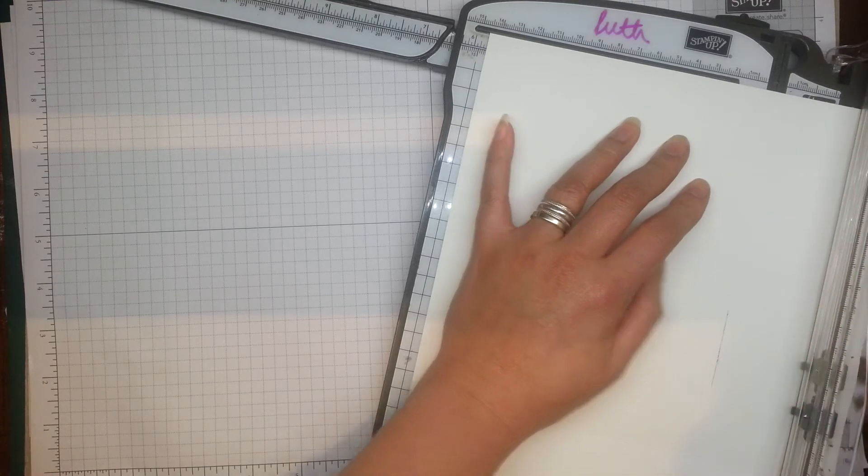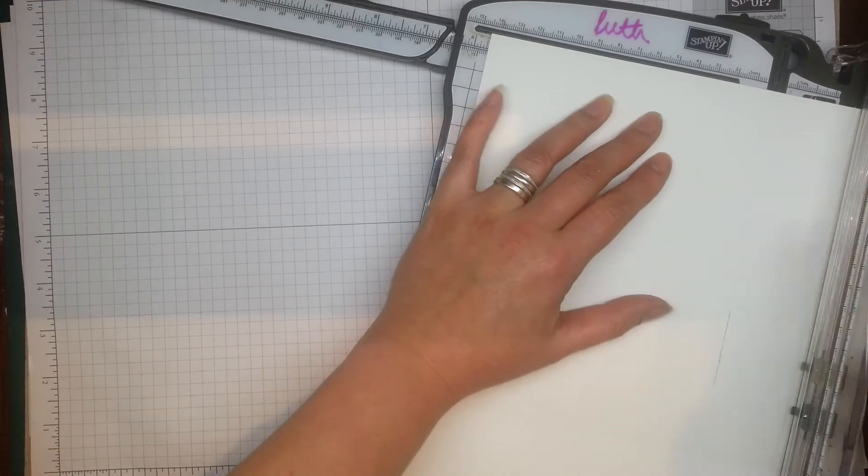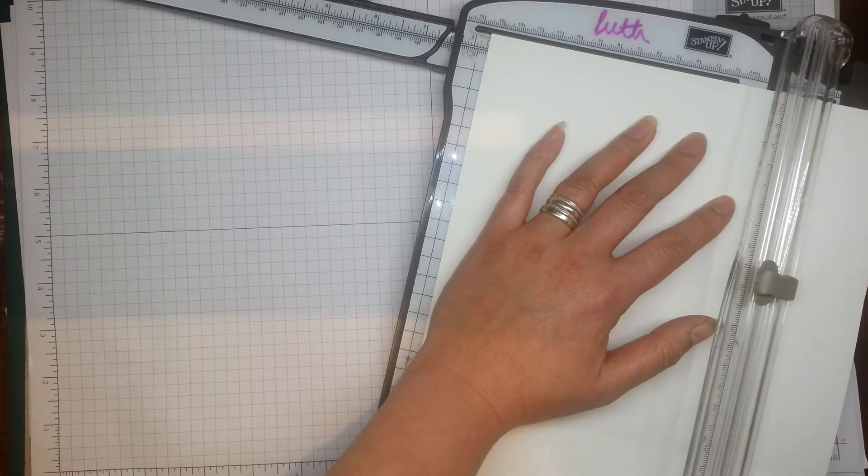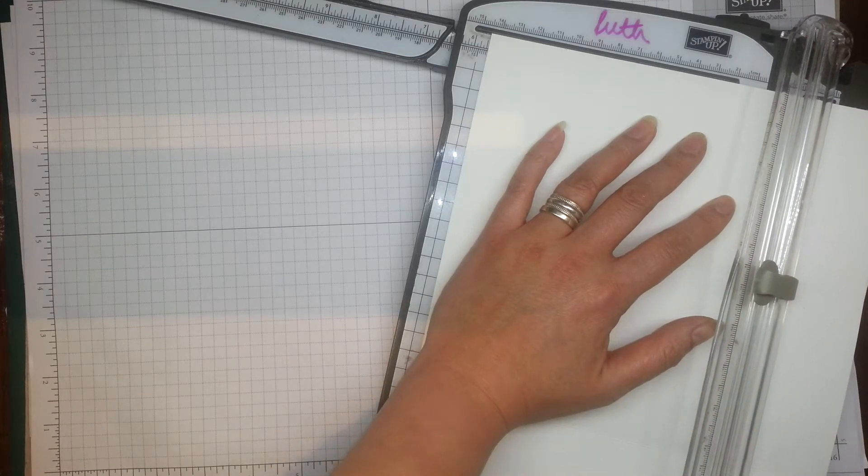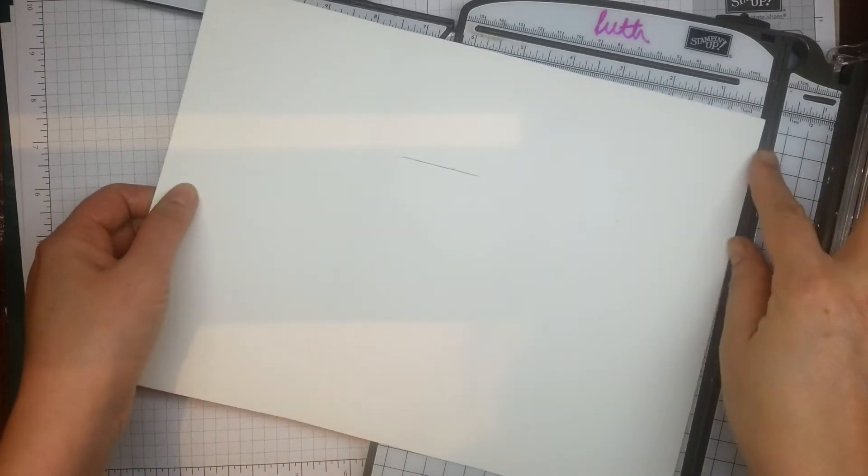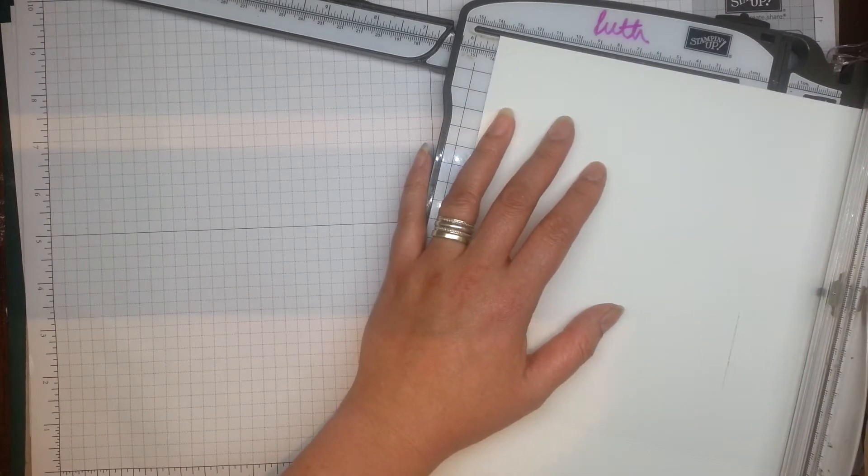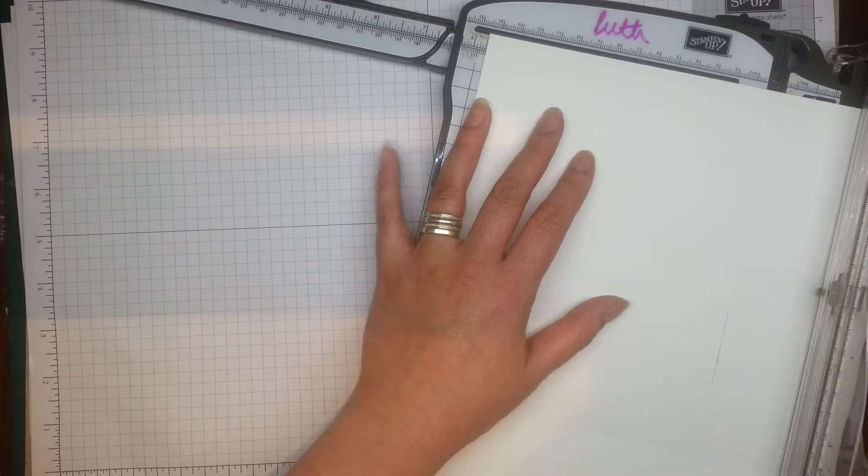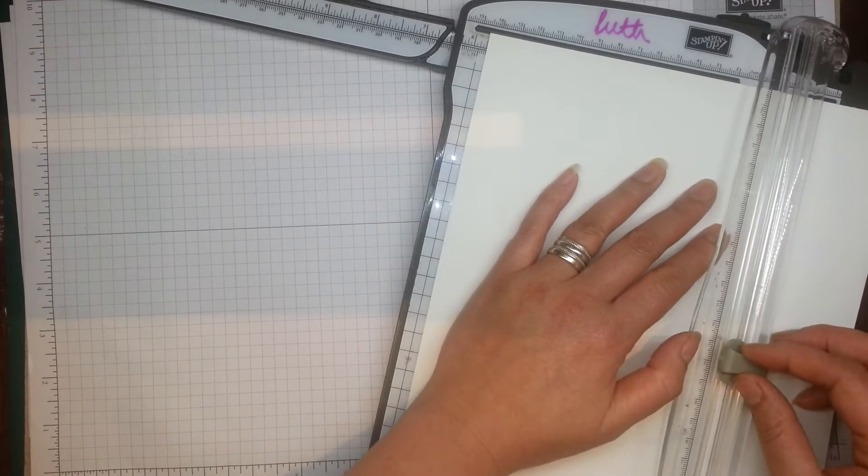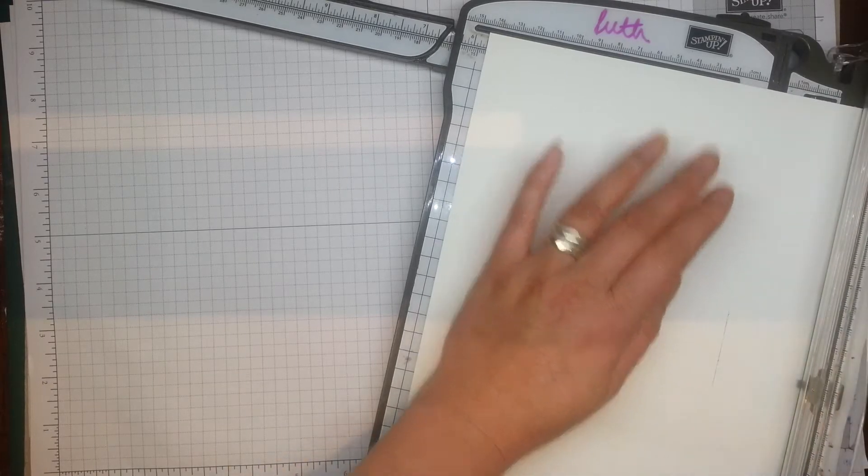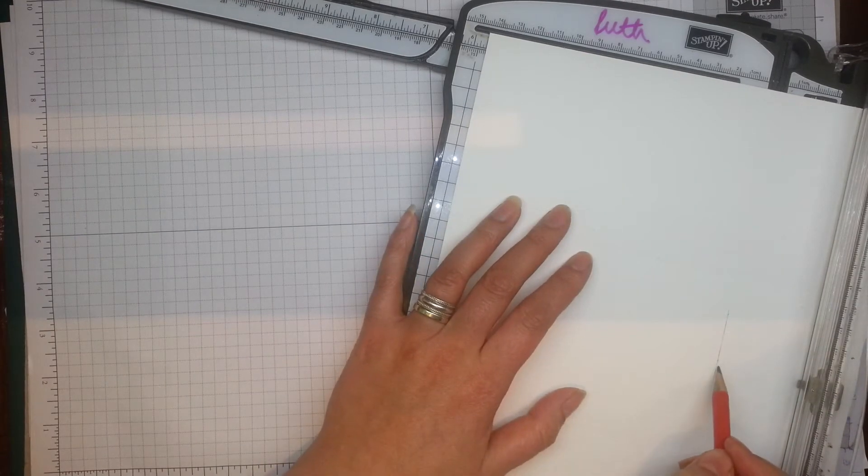And then just move it up over just a tiny notch, and mark it at, oh, what will that be? 14 and a quarter centimeters. So, that's about there. That's halfway. I think it has marked it. I'm just going to pop a pencil mark there as well, so that I can see it there.